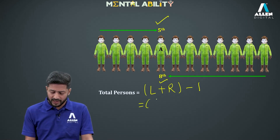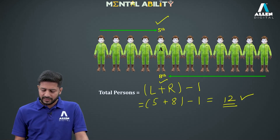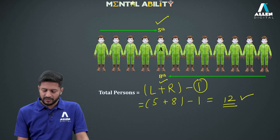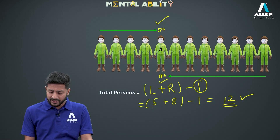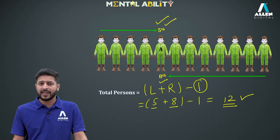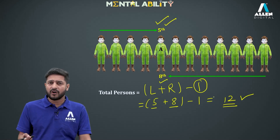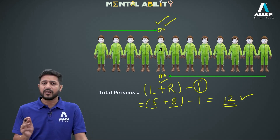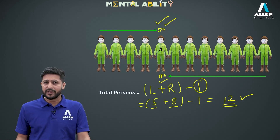Rank from the left is 5th, rank from the right is 8th, and we subtract 1 — so the total number of persons comes out as 12. The reason we subtract 1 is that when we added 5 and 8, we counted person A twice, but there is only one person A in the line. This formula applies whether positions are given from left/right or top/bottom.